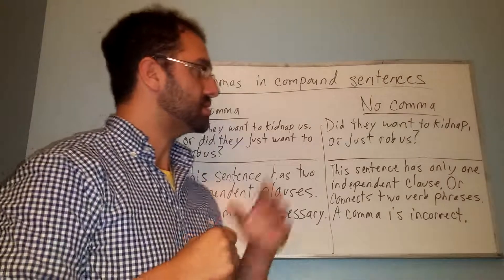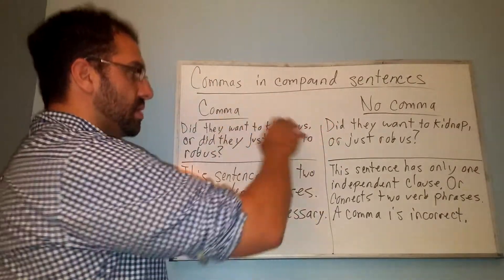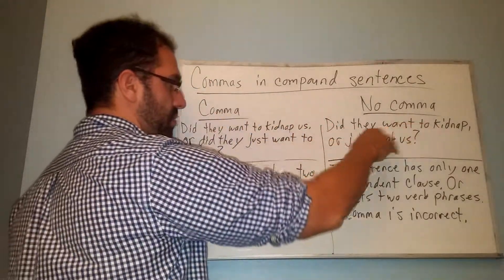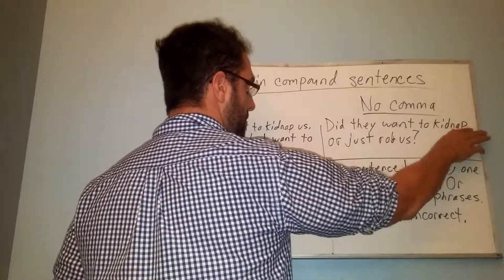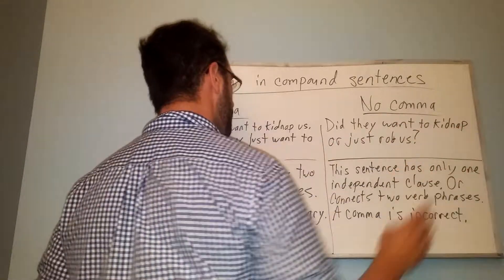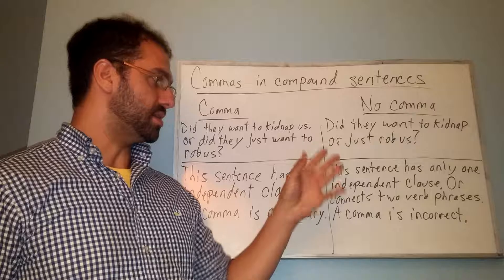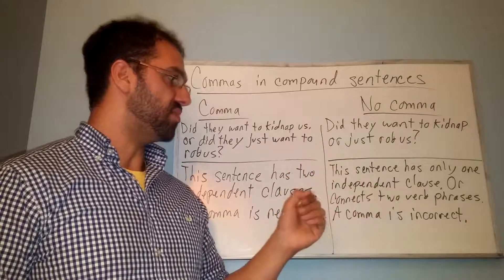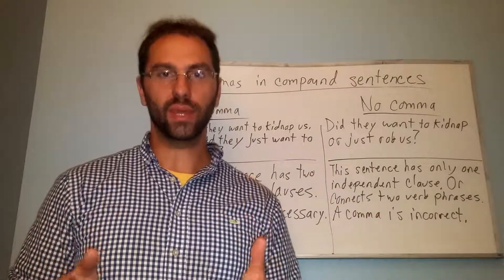Now next, this is an example where we don't want to use a comma: 'Did they want to kidnap, or just rob us?' So we don't want to use this comma here — we want to remove it — because the sentence does only have one independent clause, and it connects two verb phrases, so a comma would be incorrect.